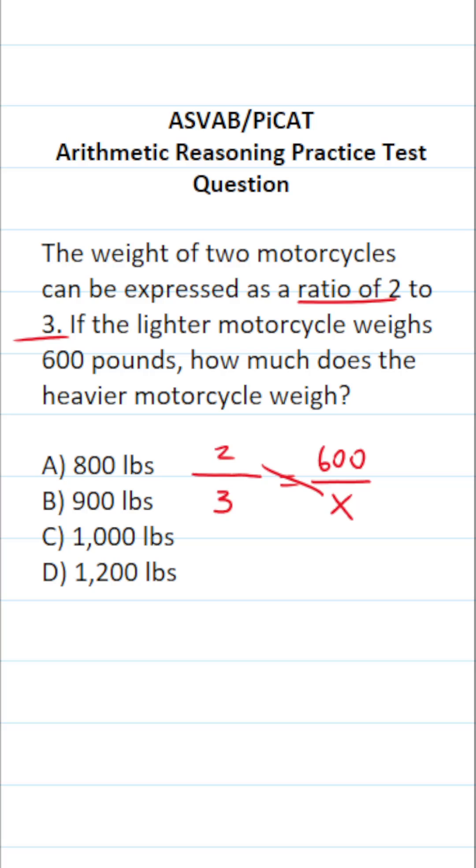This becomes 2 times X, which is 2X, equals 3 times 600. 2X equals, what is 3 times 6? 3 times 6 is 18. Therefore, 3 times 600 is going to be 1,800.